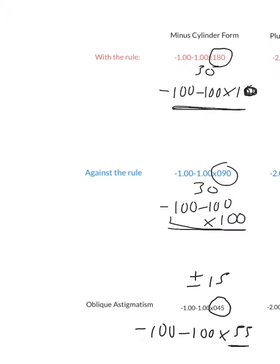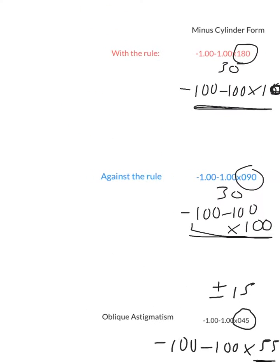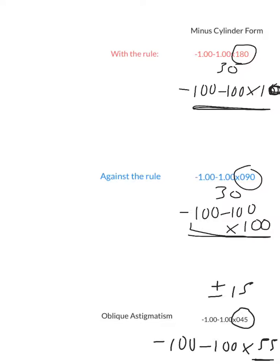So there you have it. In minus cylinder form: with the rule astigmatism is when the axis is within 30 degrees of 180; against the rule astigmatism is when the axis is within 30 degrees of 90; and oblique astigmatism is when the axis is within 15 degrees of 45. That's just for minus cylinder form.